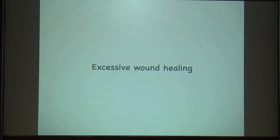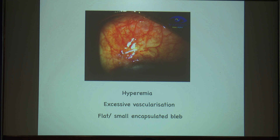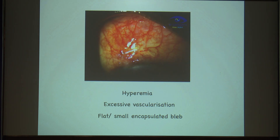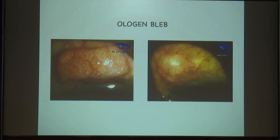Early bleb failure is because of excessive wound healing. A mitomycin bleb will have excessive hyperemia, vascularization, and an encapsulated or flat, small bleb. An ologen bleb will be rectangular or circular and will be more vascularized than a mitomycin bleb. Never mistake a round ologen for an encapsulated bleb. Seeing a congested bleb in ologen is normal, whereas in MMC if you see something like this, it is a sign that it is going for failure.